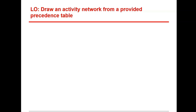Alright guys, welcome back to another online lesson. Today we're going to be looking at drawing an activity network from a provided precedence table. This is probably one of the most important tasks in critical path analysis, as if you get this part wrong, the rest of the question becomes wrong. So it's important that we get it right.